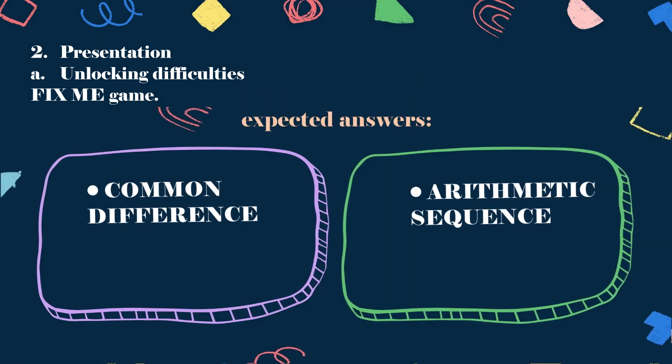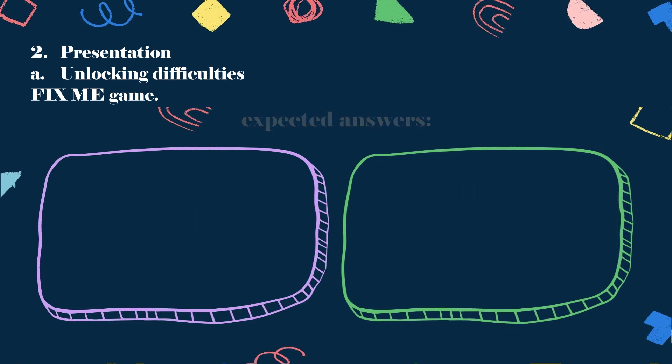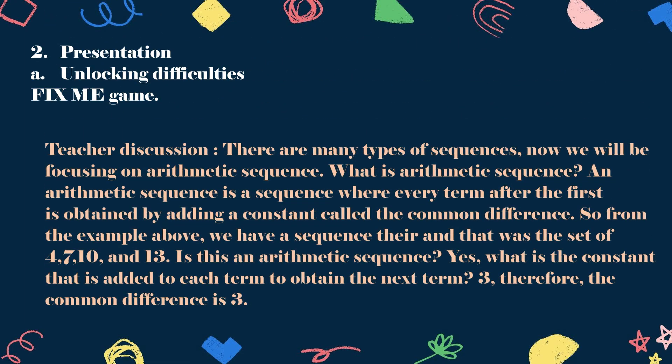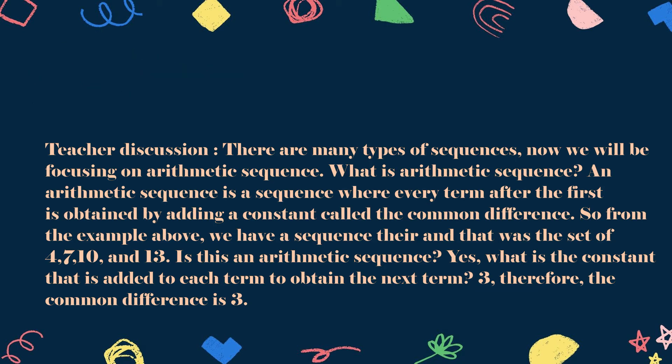Second round. Time is up. The answers are: common difference and arithmetic sequence. An arithmetic sequence is a sequence where every term after the first is obtained by adding a constant called the common difference. From the earlier example, the sequence 4, 7, 10, and 13 is an arithmetic sequence. The constant added to each term to obtain the next term is 3. Therefore, the common difference is 3.